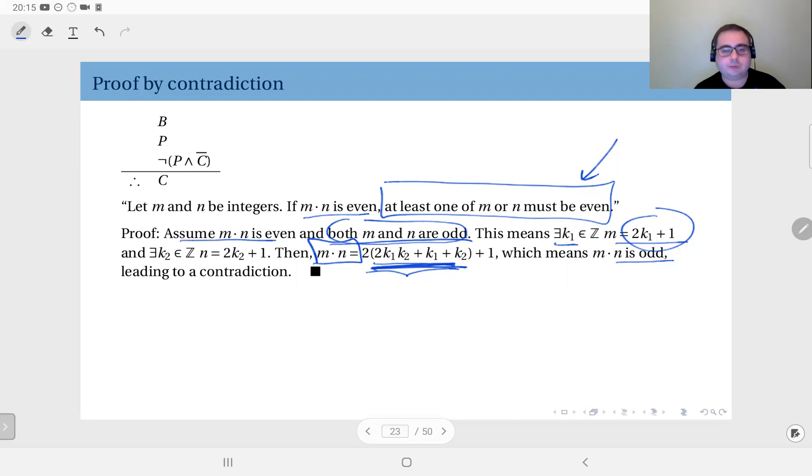However, this contradicts with this assumption. m times n is assumed to be even, so if we see that it's odd, this is a contradiction. Therefore this cannot be, and this statement is true. So this is essentially how proof by contradiction works.